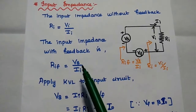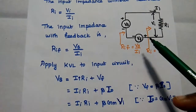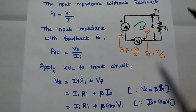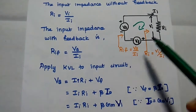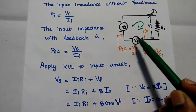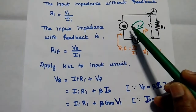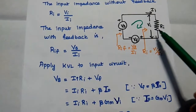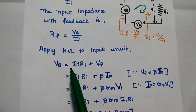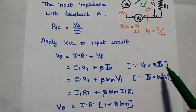The input voltage is Vs and the input current is Ii. Next, we apply KVL to this input circuit to get the value of Vs. Voltage rise is Vs, and there are two voltage drops: one across Ri and the other is the feedback signal. So voltage rise equals the sum of voltage drops: Vs is equal to Ii into Ri plus Vf. We can replace Vf with the value beta into IO.